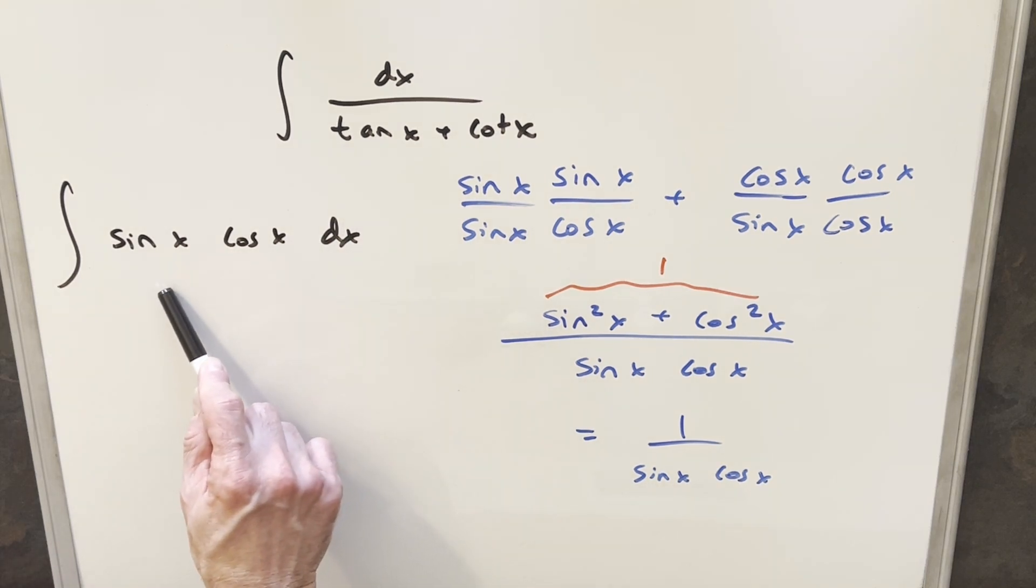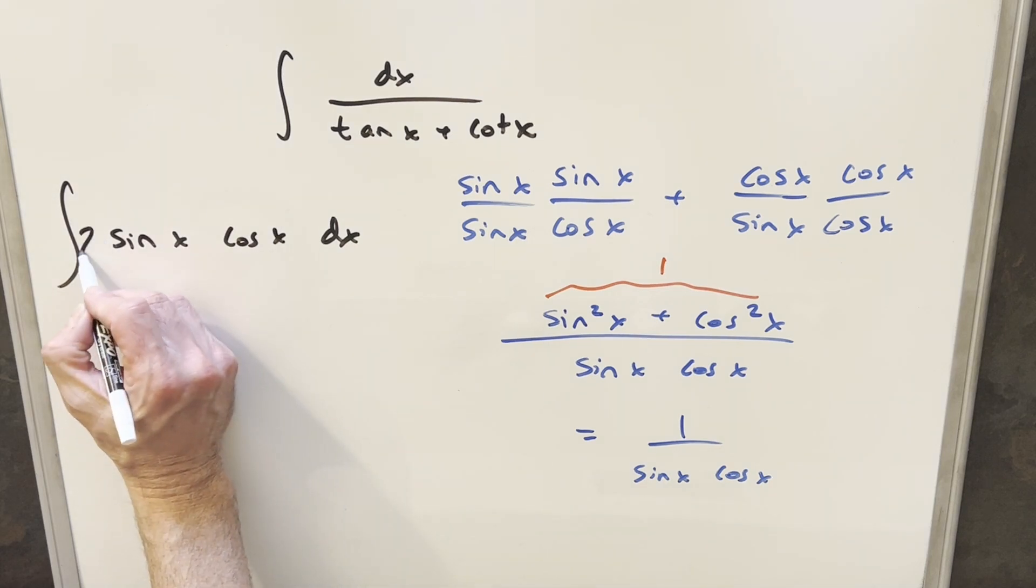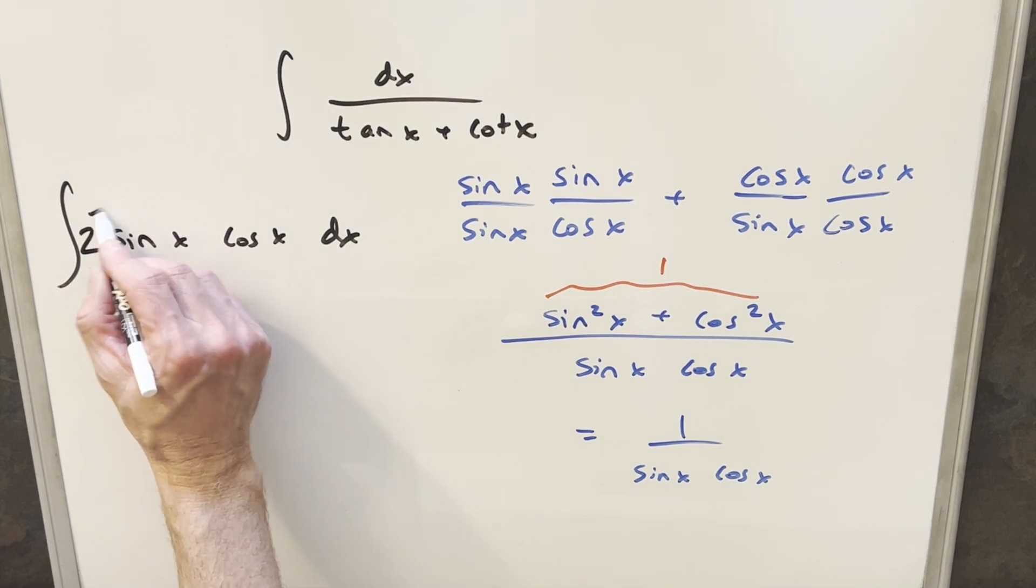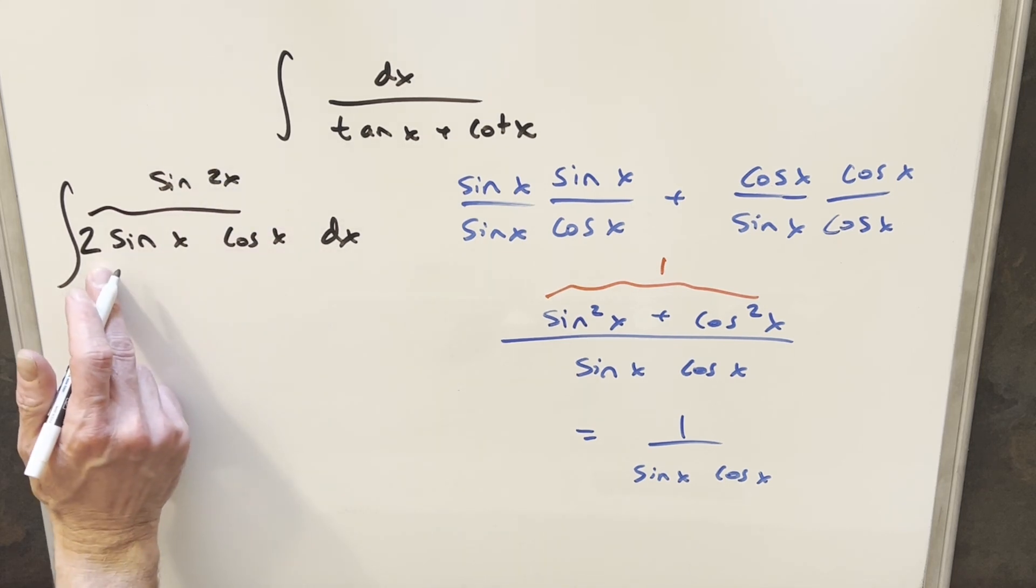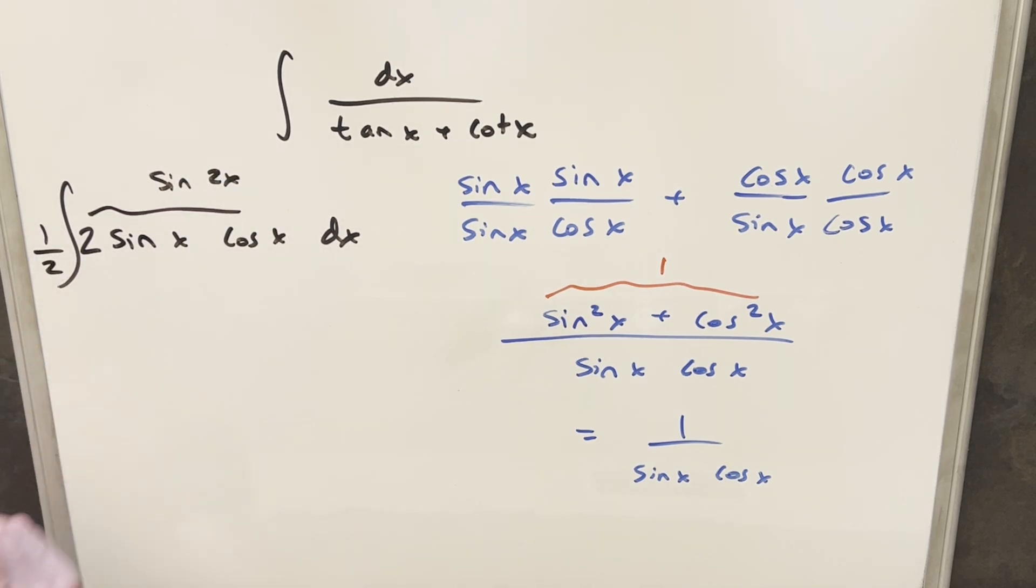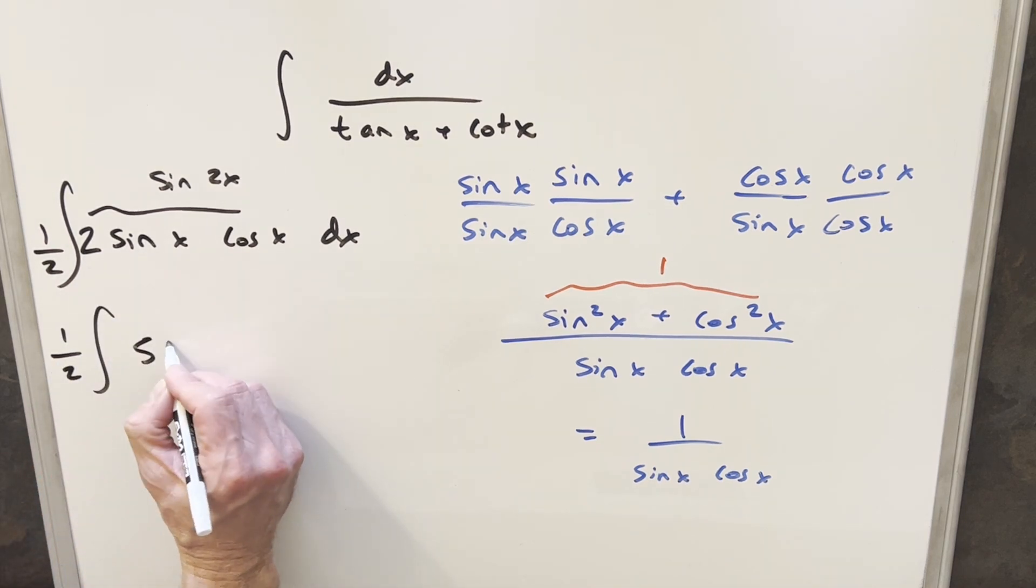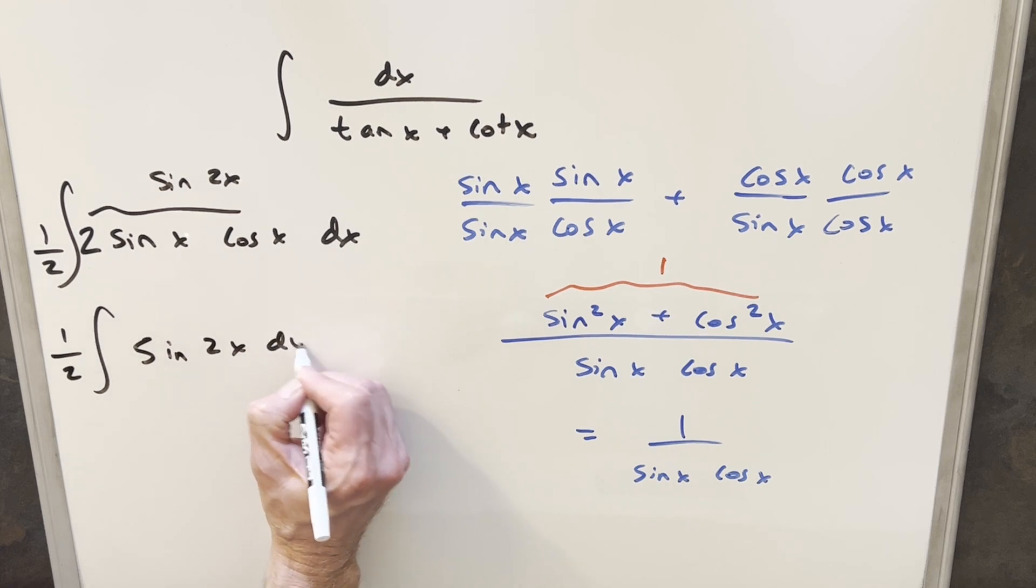And now for this here, we could just do this for a u substitution. But I think what I'm going to do is use the double angle formula. Just notice if I multiply by 2, this thing here, this is the same thing as sine of 2x. And I want to change it, so I'll multiply by a half out here. So then quick rewrite, I can write this as 1 half sine 2x dx.